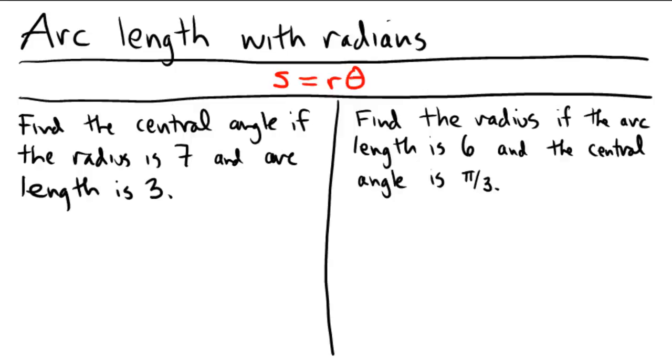So the arc length formula when you're in radians is a nice simple one. It's s equals r theta, where s represents the arc length of the circle, r represents the radius of the circle,